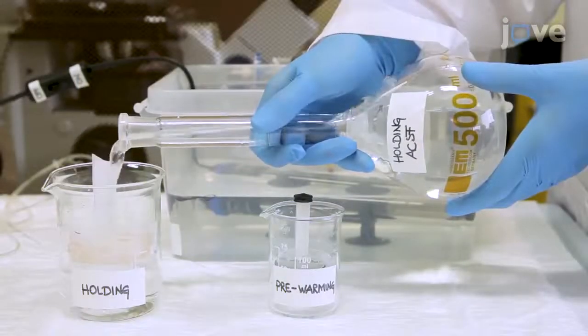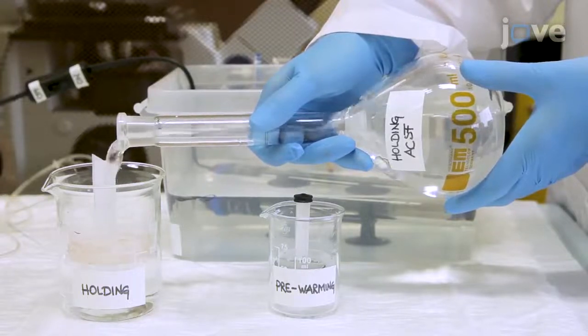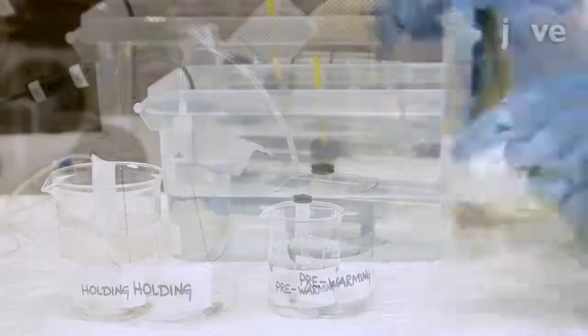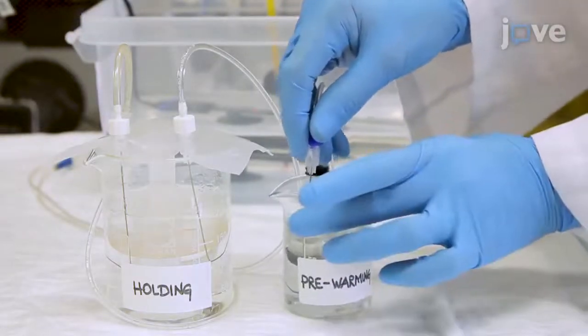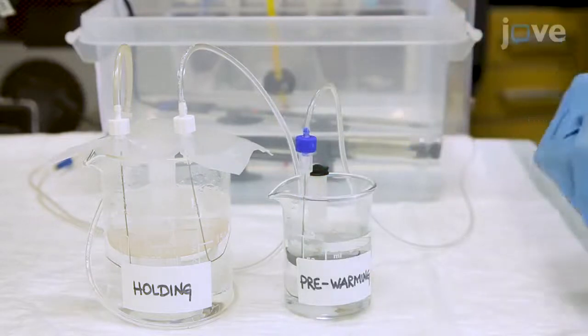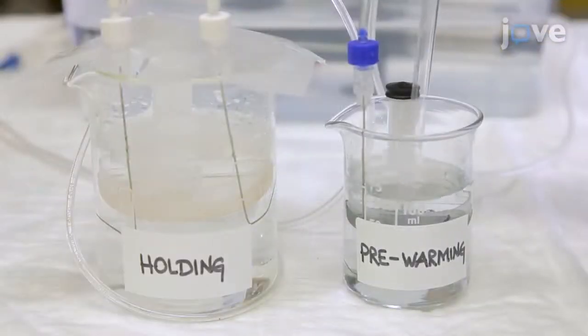Next, pour the holding ACSF into the holding and pre-warming chambers. Bubble the solutions with 95% oxygen and 5% carbon dioxide mixture, and remove any trapped bubbles using an inverted Pasteur pipette.